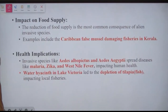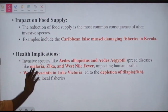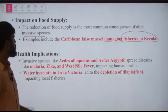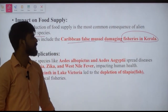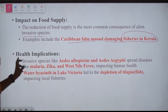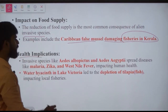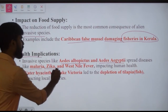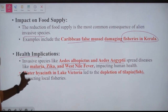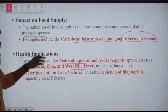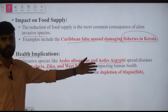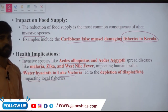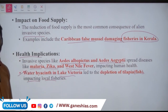Impact on food supply is the most common consequence: invasive species damage fisheries — for example, the Caribbean false mussel damages fisheries in Kerala. Health implications also arise from species like Aedes albopictus and Aedes aegypti mosquitoes, which spread malaria, Zika virus, and West Nile virus. Water hyacinth in Lake Victoria has led to depletion of tilapia, impacting local fisheries.